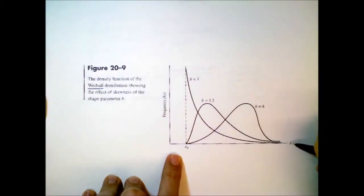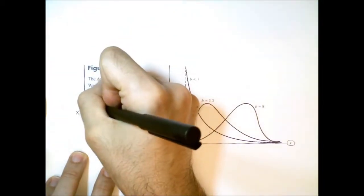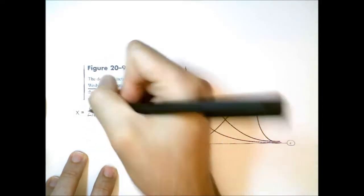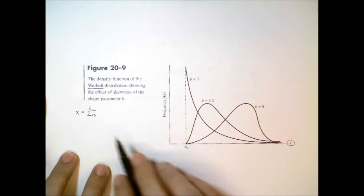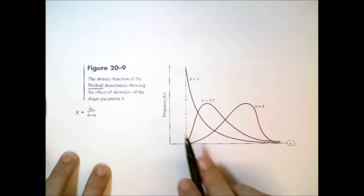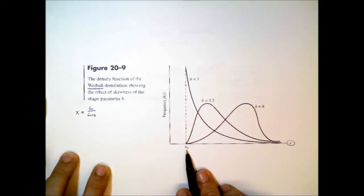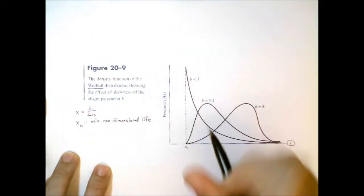Down here, this horizontal axis x, that is the non-dimensional life. So I define x as life in revolutions divided by the L10 value, usually 10 to the 6th. So we non-dimensionalize life using the L10 value. And then the vertical axis, that's the frequency of failure. And this value down here of x0, that's the minimum guaranteed life value in non-dimensional terms.